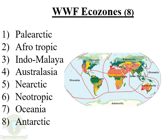The WWF prescribed ecozones or eco-regions are: the Palearctic region, the Afrotropical region, the Indomalayan region, the Australasian region, the Nearctic region, the Neotropical region, Oceania, and the Antarctic region.